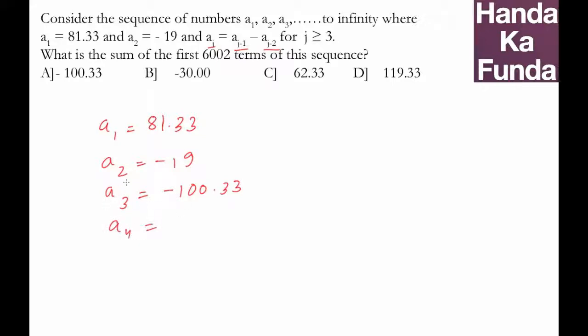So a3 minus a2 will be -81.33. a5 will be a4 minus a3, which is -81.33 minus -100.33, giving us 19.